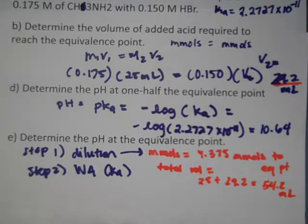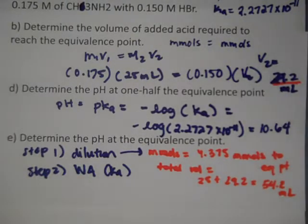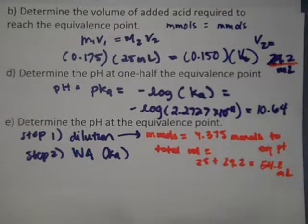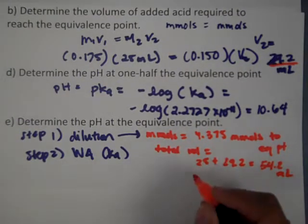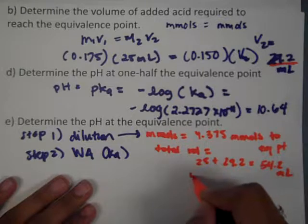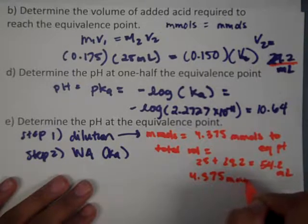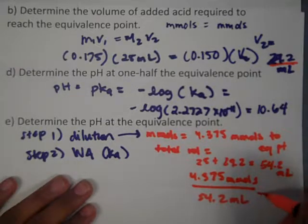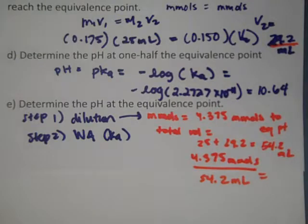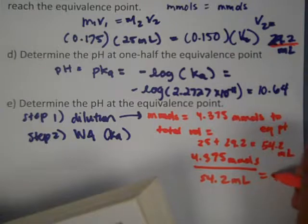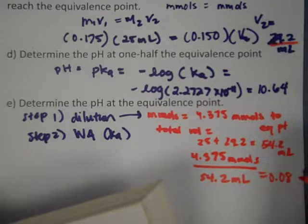Make sure you keep in mind what volume was added to the equivalence point, because you need both the moles and the volume to find the new molarity. So the new molarity is 4.375 millimoles over 54.2 milliliters — the milli units cancel — giving a molarity of approximately 0.081 M.